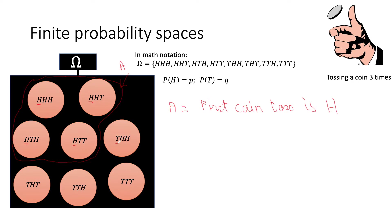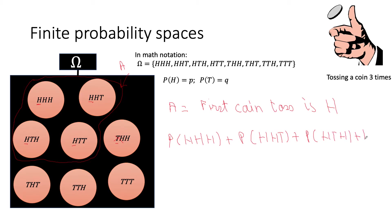The outcomes where the first toss is heads are: HHH, HHT, HTH, and HTT. The outcome TTT is not part of event A because the first toss there was not heads. To find the probability of set A, we sum the weights of all elements inside the set: P(HHH) + P(HHT) + P(HTH) + P(HTT). Summing all these gives us the probability of event A.